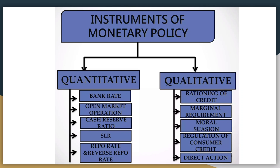अब आते हैं qualitative instruments या qualitative tools। पहला है rationing of credit — यह एक तरीका है कि आप credit को कैसे control करें। जो भी commercial banks loan देती हैं, उसमें आप set कर सकते हैं कि limited amount क्या होगी, कितना total loan वो दे सकती हैं — इसके लिए rationing of credit का use होता है। दूसरा है marginal requirement — यह market value of security और maximum loan की value के बीच के difference को बताता है। इसका use loan को increase या decrease करने के लिए किया जाता है। तीसरा है moral suasion — यह persuasion और request को बताता है। Inflation को रोकने के लिए central bank, commercial banks से request कर सकती है कि वो उतना ही loan provide करें जितनी ज़रूरत हो।